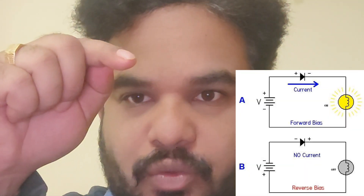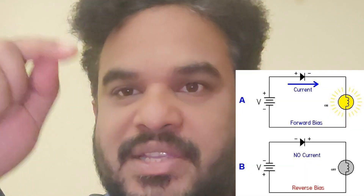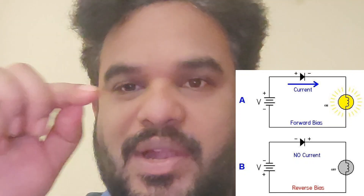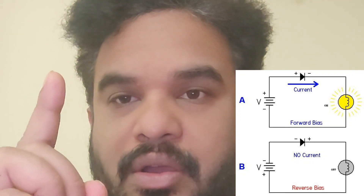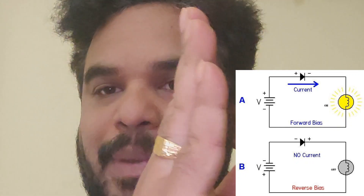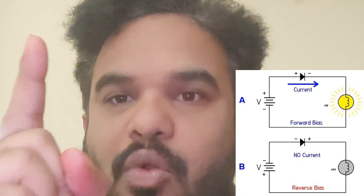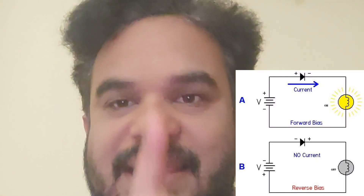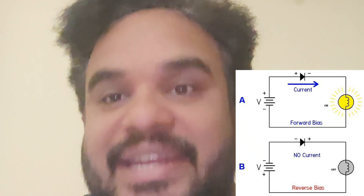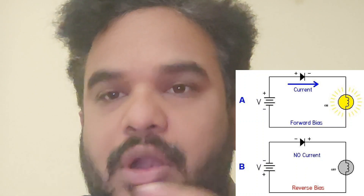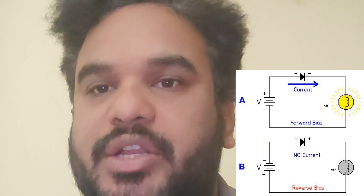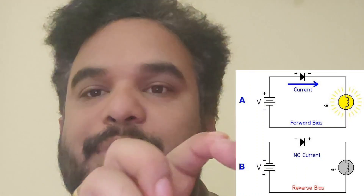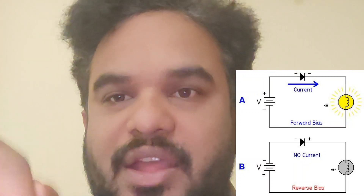We will discuss forward bias and reverse bias of a diode. You can see figure 1 and figure 2. Figure 1 is forward biased, figure 2 is reverse biased. In figure 1, the left part is anode and the right part is cathode. Anode is connected to the positive and cathode to the negative — that means it is forward biased and the light is on. Forward biased means the diode behaves as a short circuit, so input voltage will appear across the load.